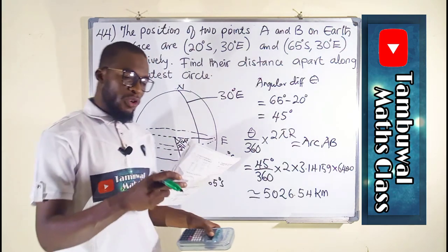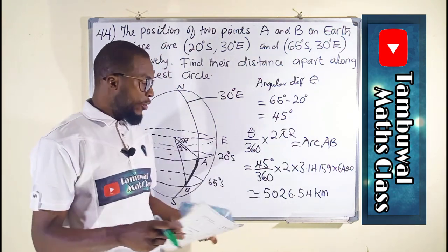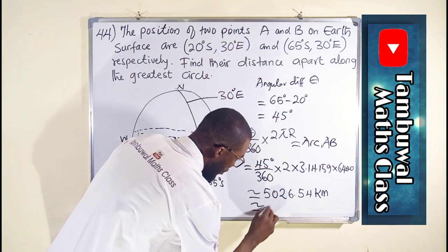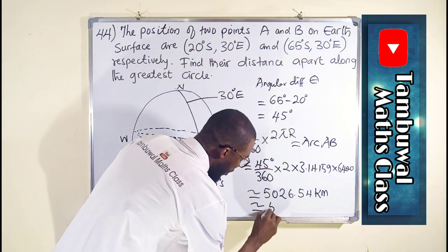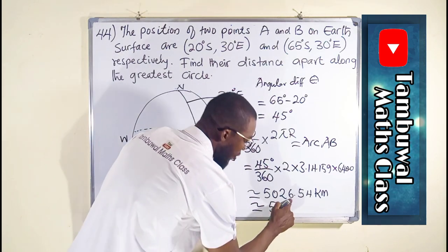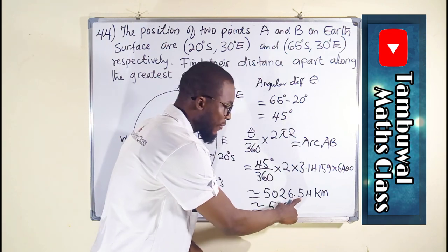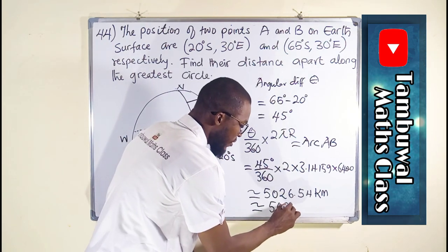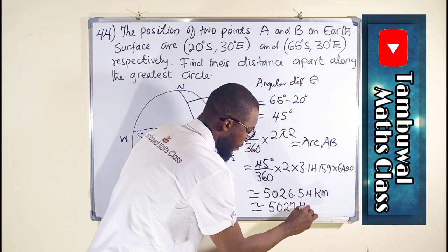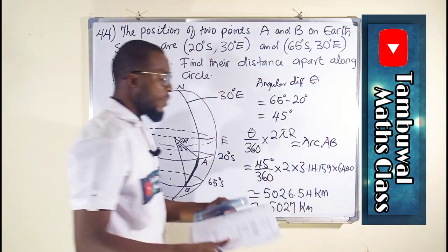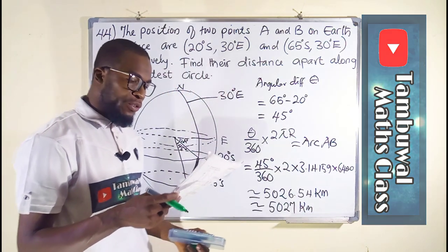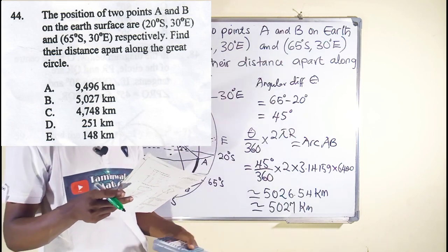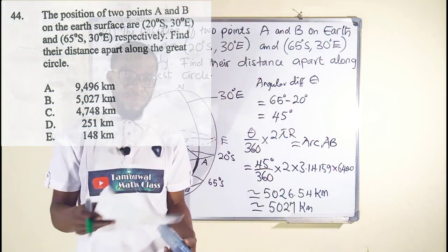From the options they rounded off to the nearest kilometer. Instead of 5,026.5, since the digit after 6 rounds it up, we get approximately 5,027 kilometers. This corresponds to option B. So now let us move on to question number 45.